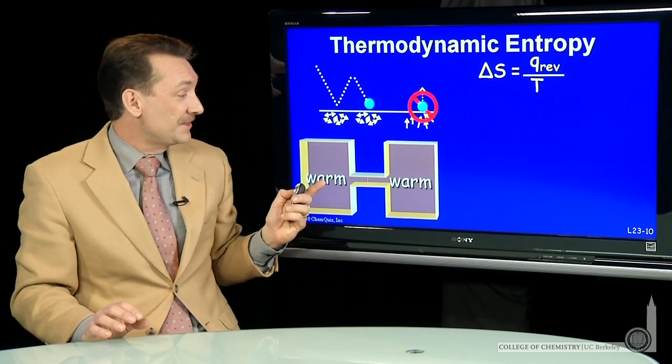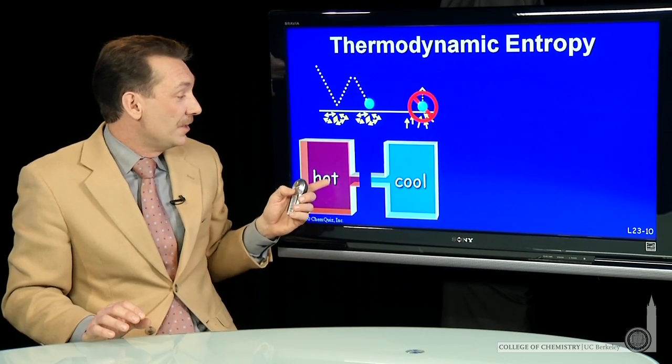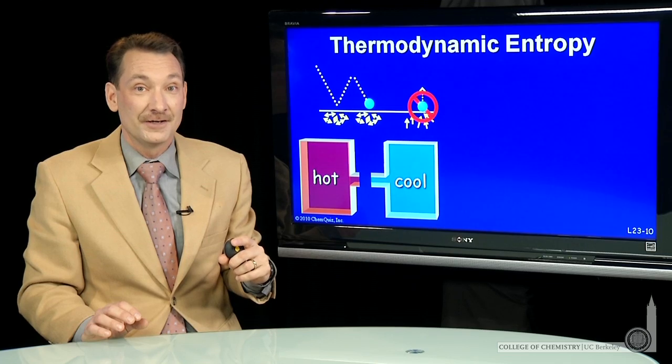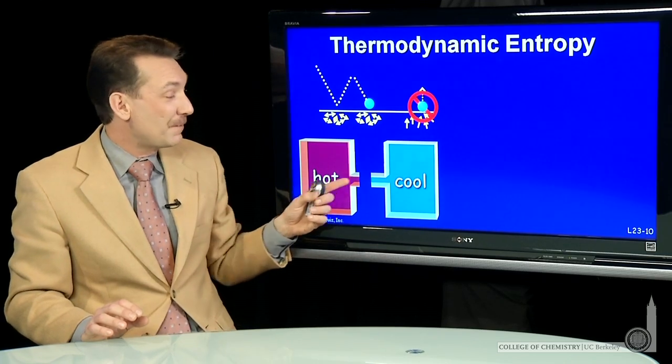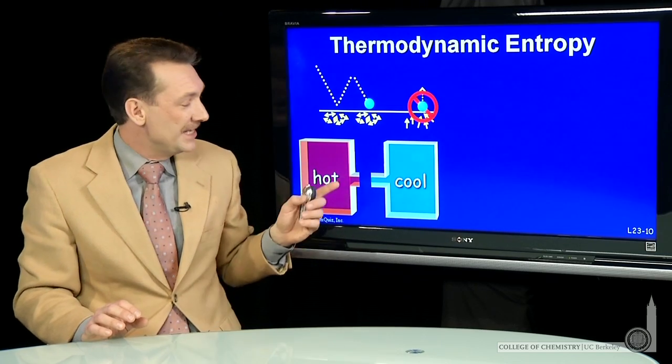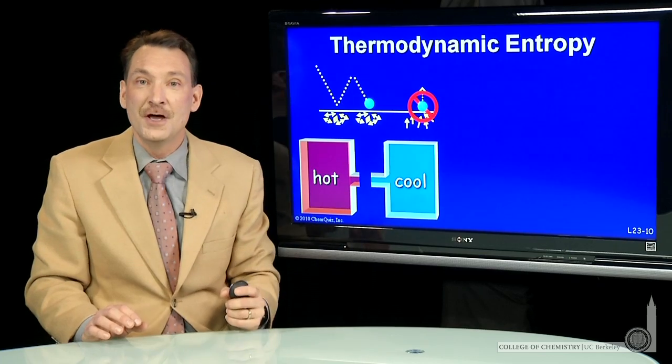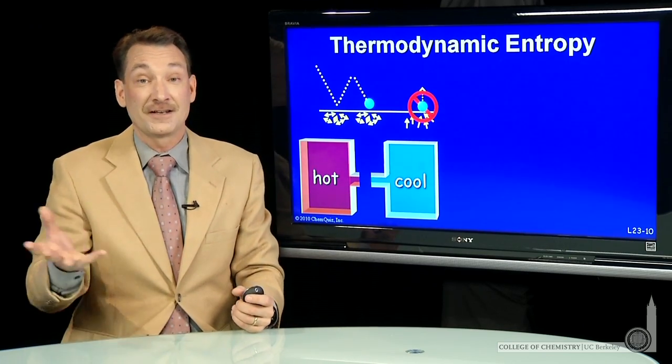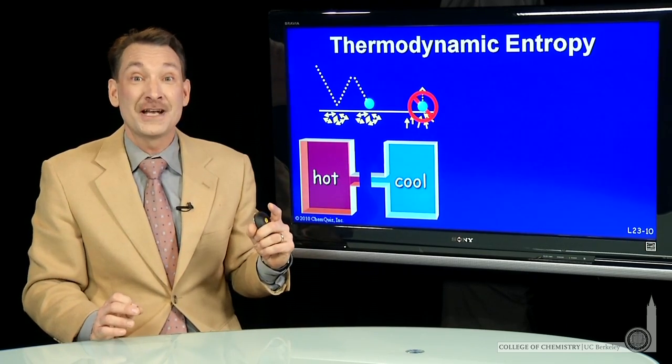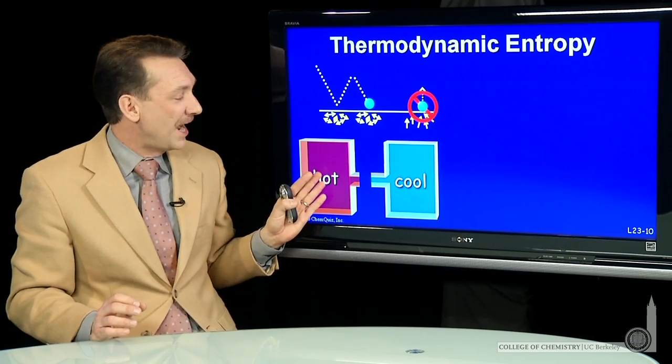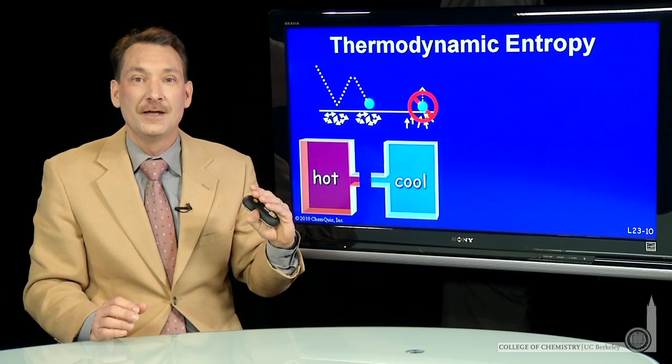When a system, for instance, goes from bringing a cool and a hot system together, we can measure that by the heat transferred. Heat always goes from a hotter system to a cooler system. In fact, some people call that the second law of thermodynamics. Heat always moves from hot to cool.